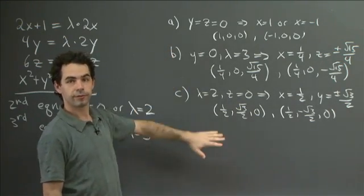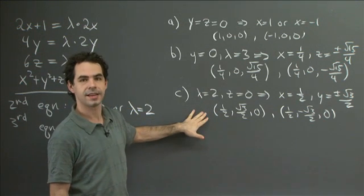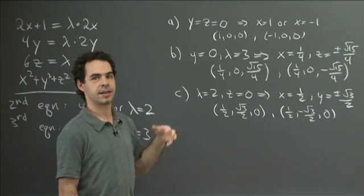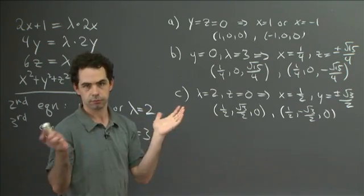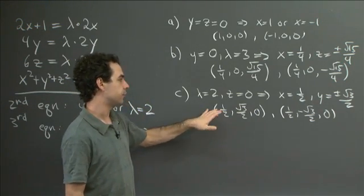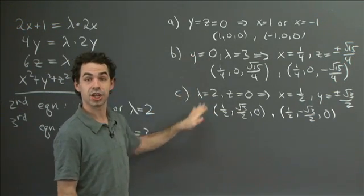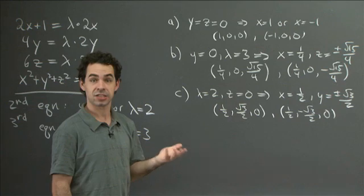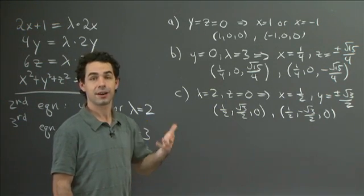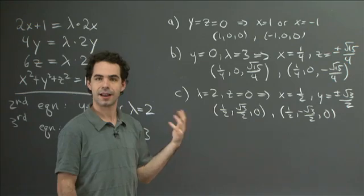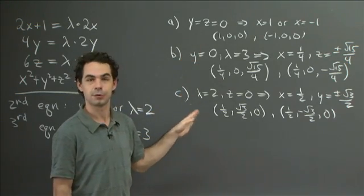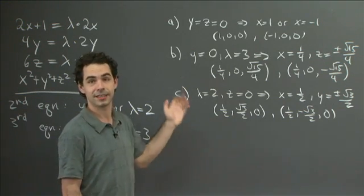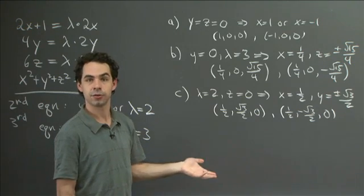Those were our three cases. We've solved each of them all the way down to finding the points they lead to. Remember, we said already that there's no boundary to this region — it's just the sphere, it has no edges — so these are the only points we have to check. We have to check these six points by looking at the value of f at each of them to figure out where f is maximized and where f is minimized.